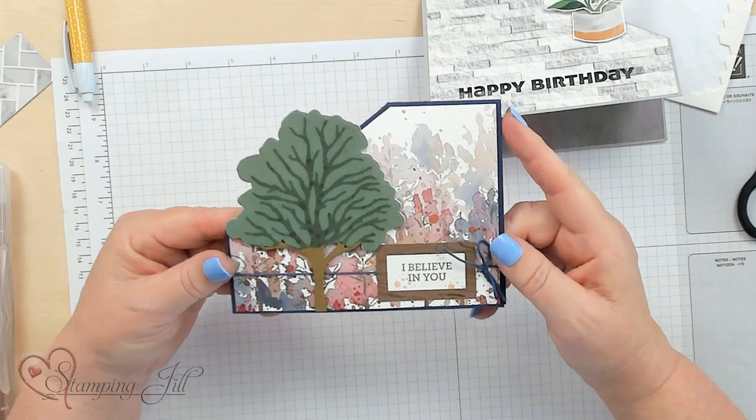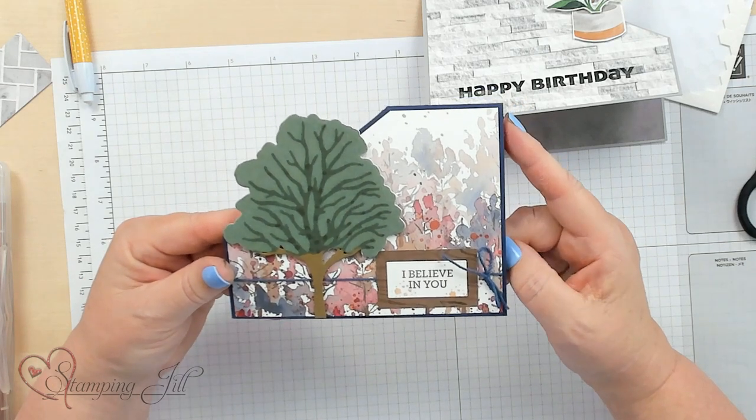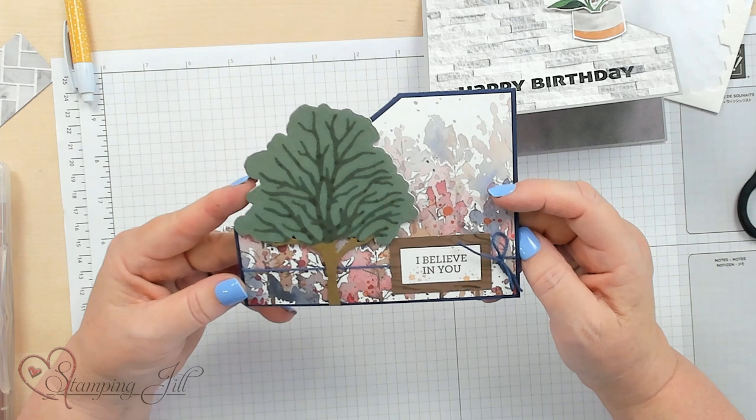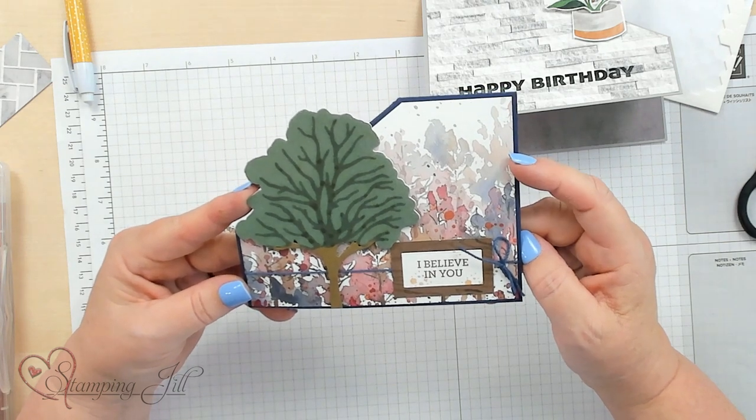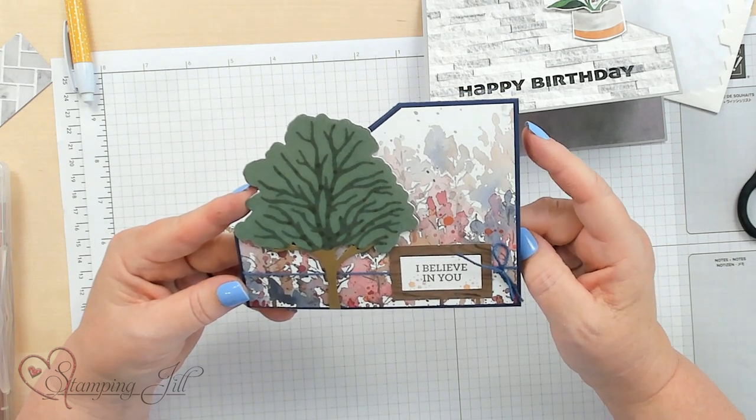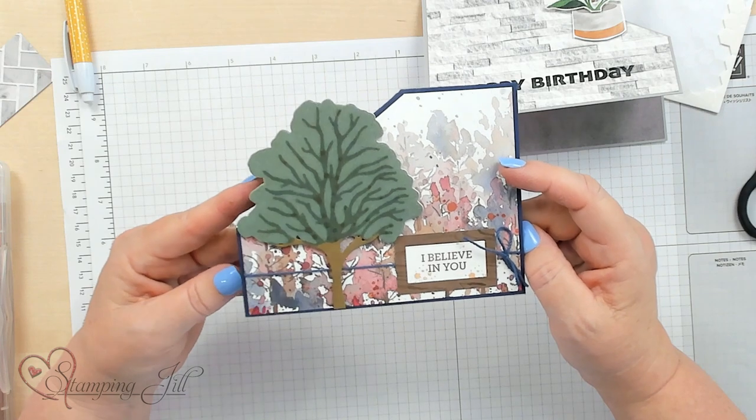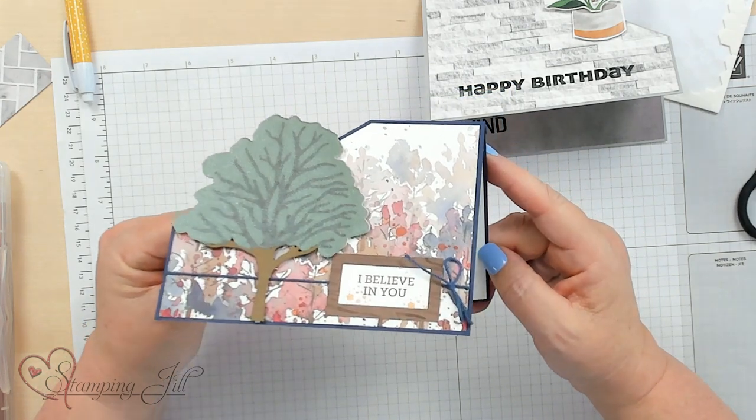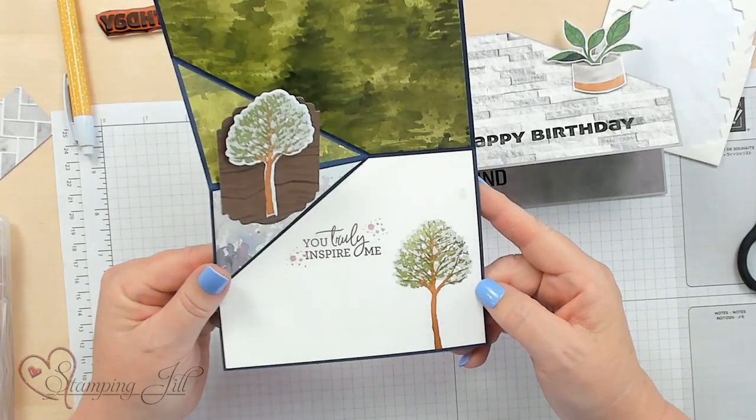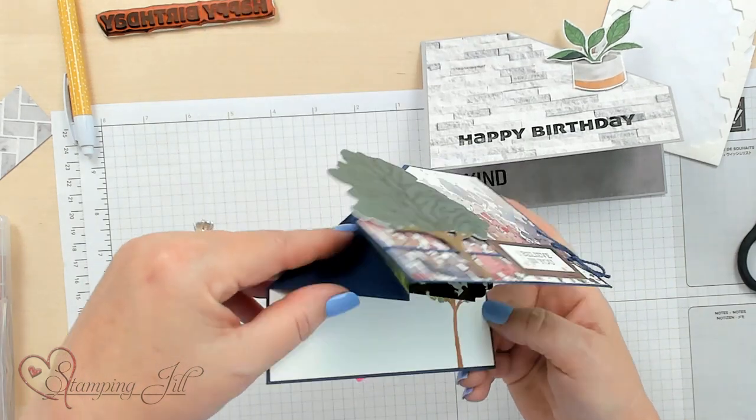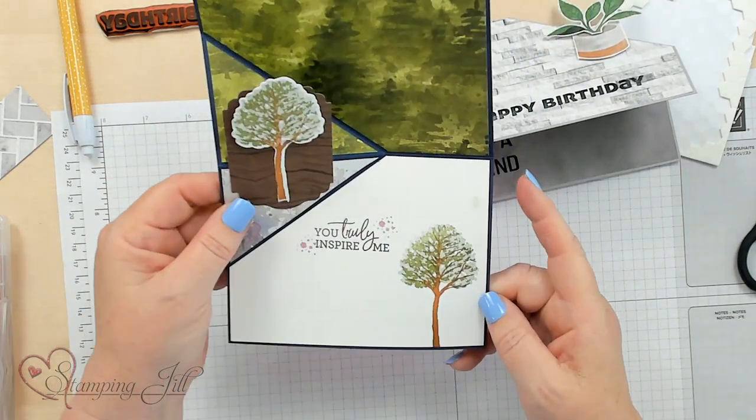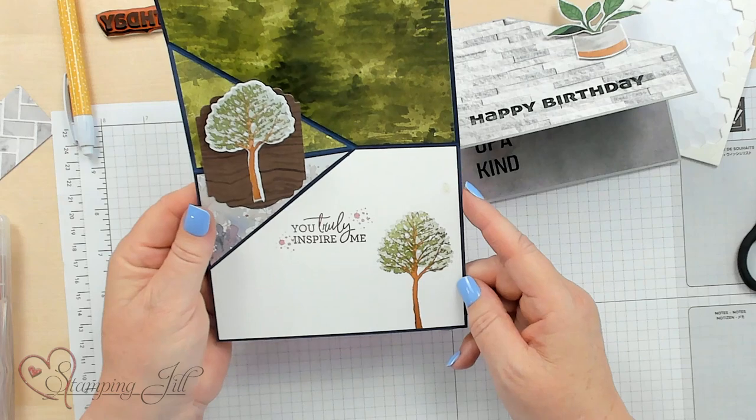Look how cool that looks. You Are One of a Kind. It doesn't have to be decorated a lot to be a masculine card. Let me show you some other ideas that I've come up with the corner flip fold that are also masculine ideas. This one right here is done with Beauty of Friendship stamp set and Beauty of Earth designer series paper. This is another cool one. Look how you open up the inside and it pops out.